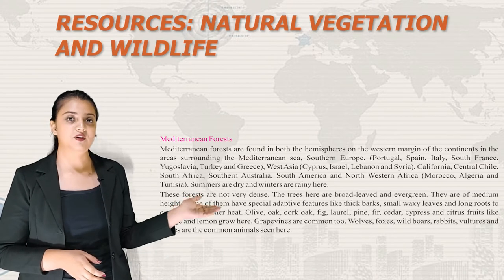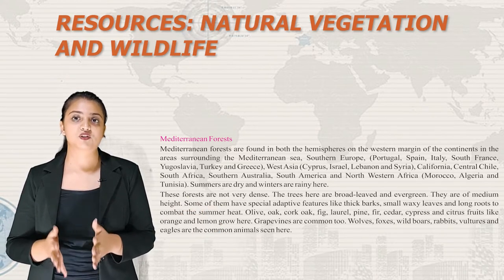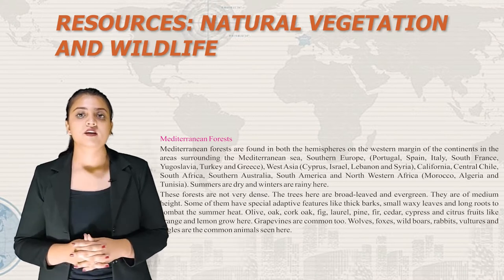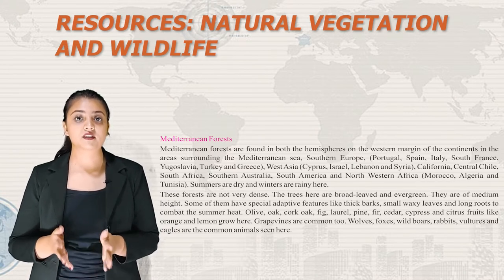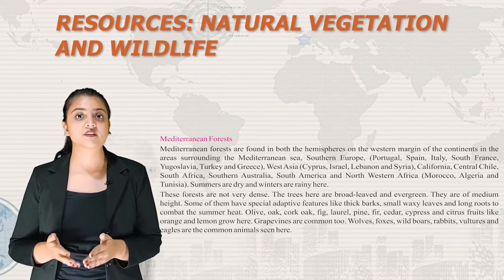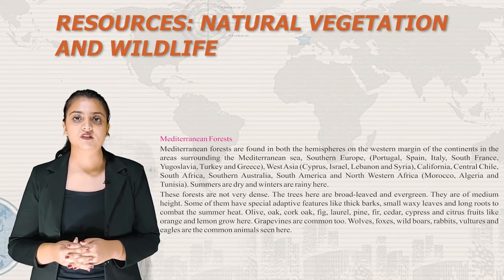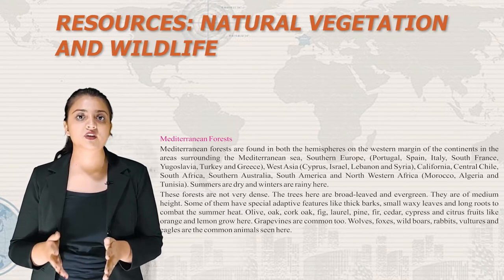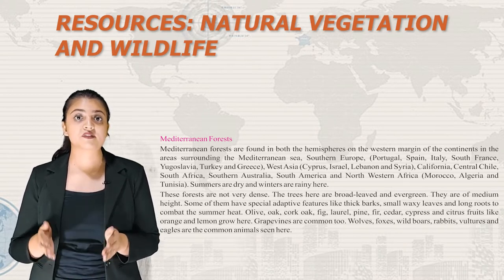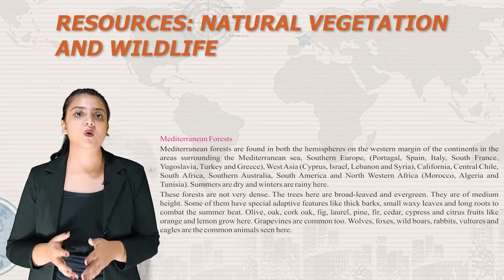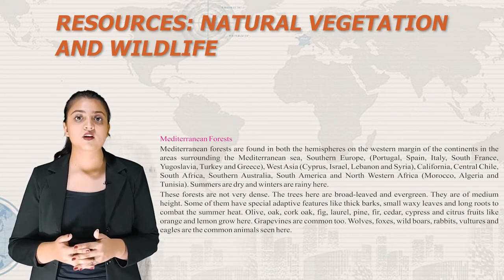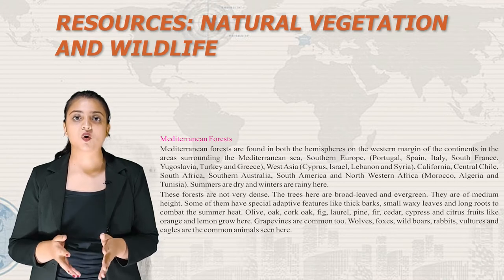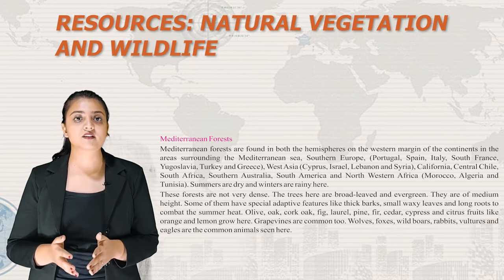Mediterranean forests are found in both hemispheres on the western margin of continents, in areas surrounding the Mediterranean Sea, Southern Europe (Portugal, Spain, Italy, South France, Yugoslavia, Turkey, Greece), West Asia (Cyprus, Israel, Lebanon, Syria), California, Central Chile, South Africa, Southern Australia, South America and North Western Africa (Morocco, Algeria, Tunisia). Summers are dry and winters are rainy. The trees are broad-leaved, evergreen and of medium height with adaptive features like thick barks, small waxy leaves and long roots. Olive, oak, cork, fig, laurel, pine, fir, cedar, cypress and citrus fruits grow here. Wolves, foxes, wild boars, rabbits, vultures and eagles are common animals.